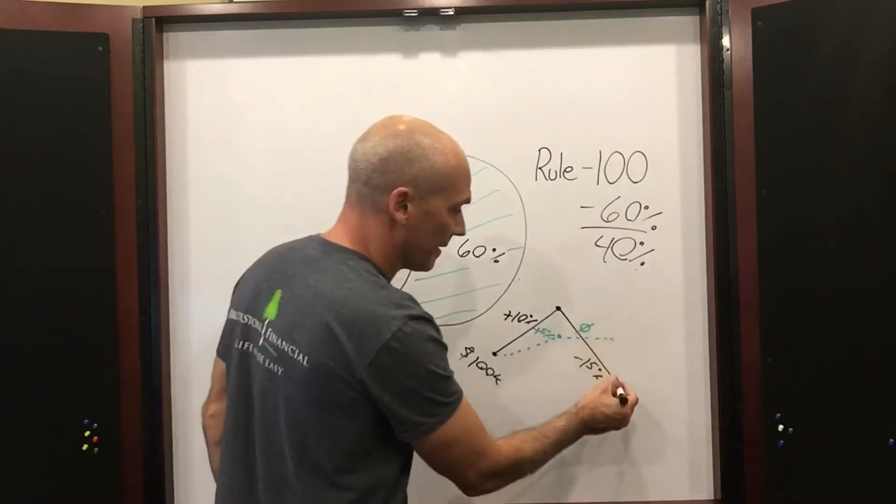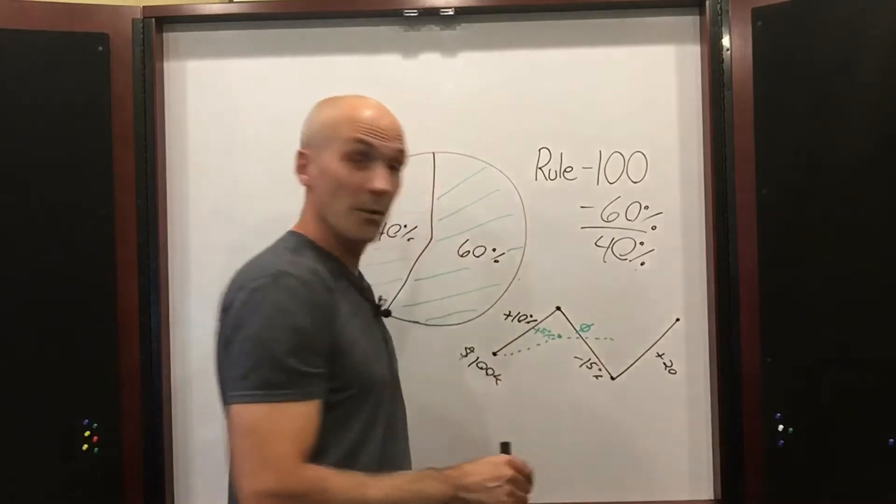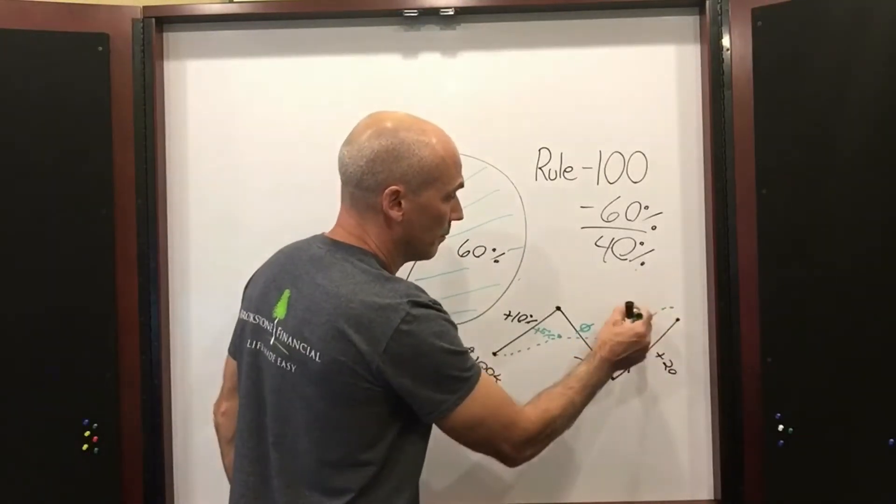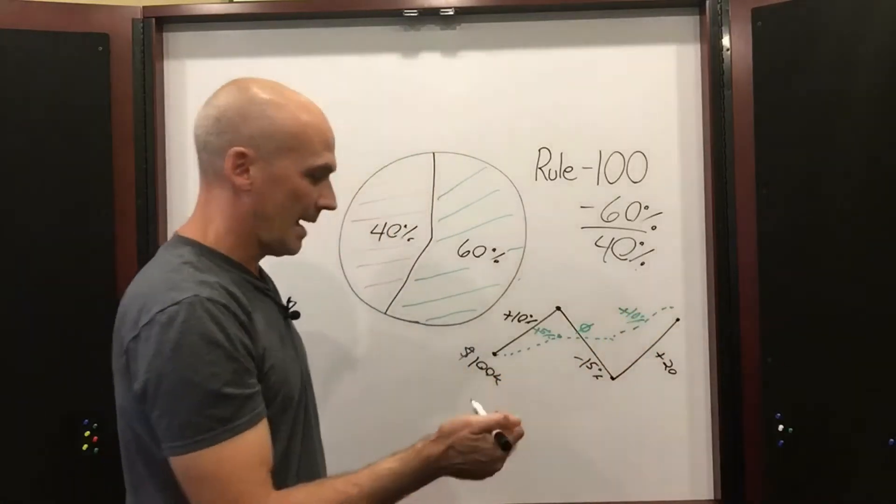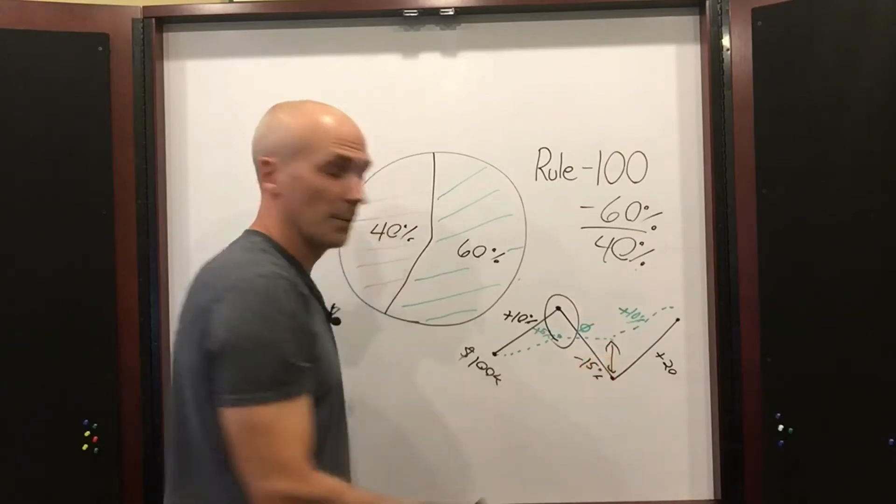Year three in this hypothetical example, the S&P 500 goes up 20%. You don't get 20%, guess what? You get 10%. So you're giving up some of the upside, which is here, in exchange for protection from the downside.